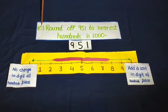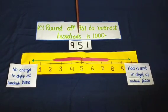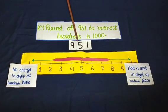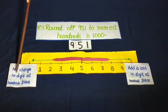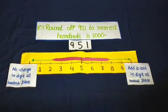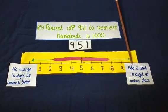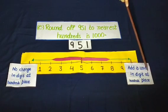Let's see if it is true or false. Statement E is: round of 951 to nearest hundreds is 1000. When we do rounding to the nearest hundreds, look at the tens place. If the digit is 4, 3, 2, or 1 at the tens place, no change in the digit at the hundreds place. If the digit is 5, 6, 7, 8, or 9 at the tens place, add a unit to the digit at the hundreds place.